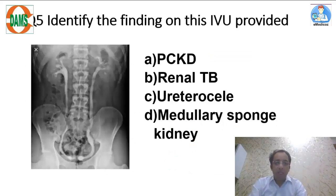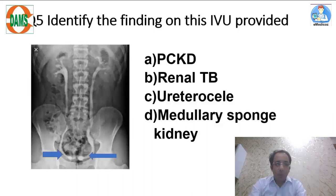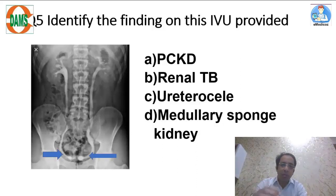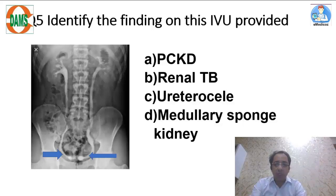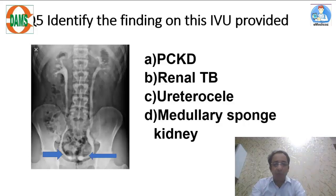The next question shows an IVP — intravenous urography. Look at the arrows marked in the image: the distal part of the ureter is dilated, and the distalmost part is most dilated, giving rise to an adder head appearance. This is congenital dilatation of the distal ureters, which is seen in ureterocele. The answer is ureterocele — this is a previous NEET PG image and the same question has been asked before.